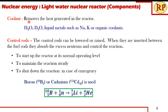The control rods, when inserted between the fuel rods, absorb excess neutrons. Boron or cadmium is used as control rod material — boron reacts with a neutron to form lithium and helium, or to form boron-11 and emit gamma radiation. Cadmium similarly absorbs neutrons. The control rods function to start up the reactor at normal operating temperature, maintain the reaction steady, and shut down the reaction in an emergency.